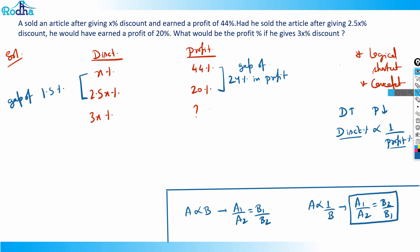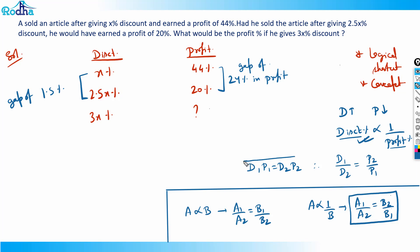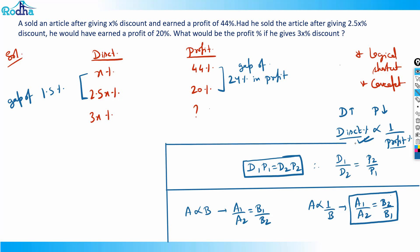Since discount is inversely proportional to profit, we write d1 by d2 equals p2 by p1, which means d1 times p1 equals d2 times p2. This is the key formula we'll apply now.